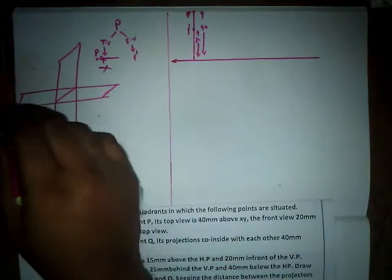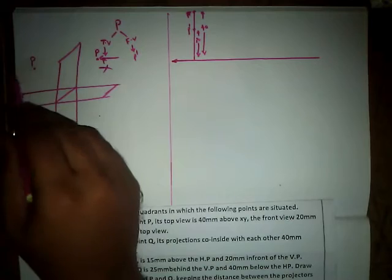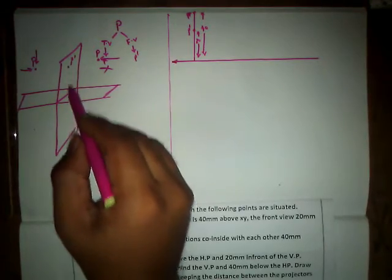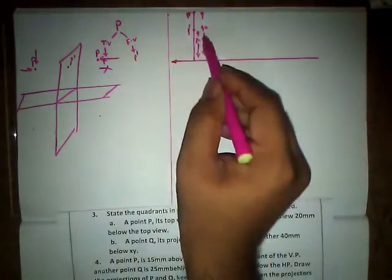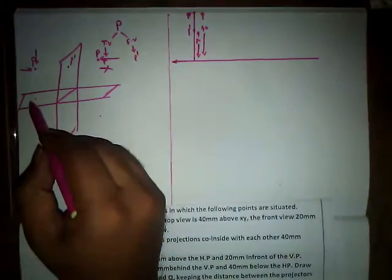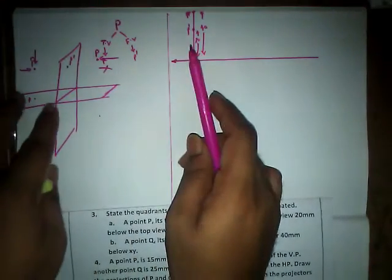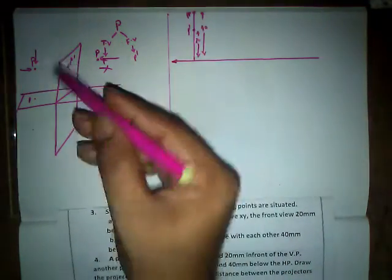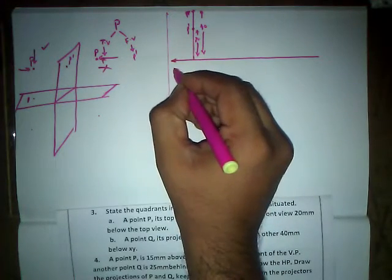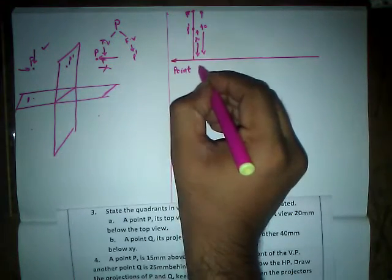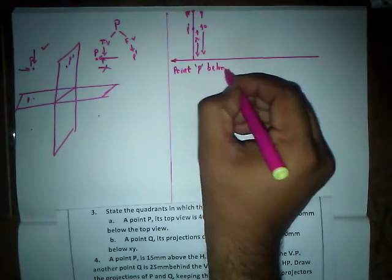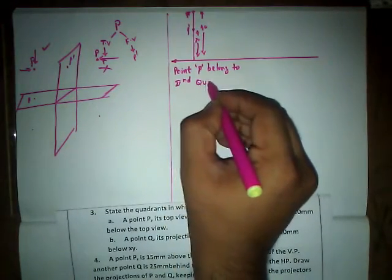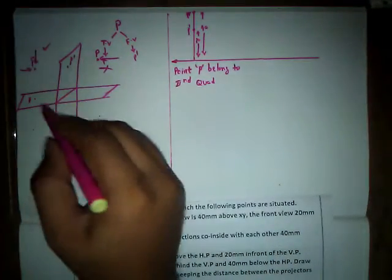Checking the next option: if capital P is placed in the second quadrant position, the front view P dash appears above the XY reference line, and upon rotating the horizontal plane upwards, small p also appears above the XY reference line. This matches our given conditions.